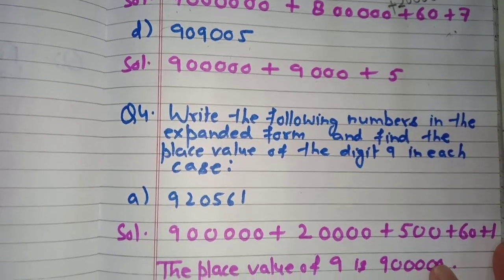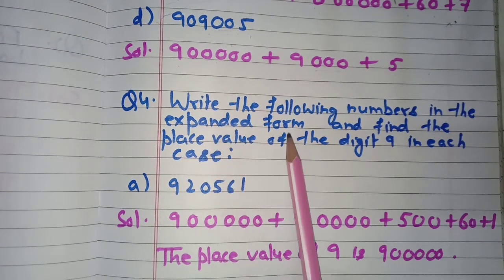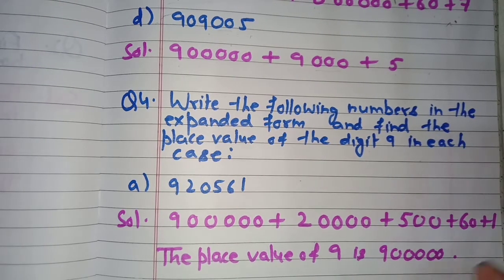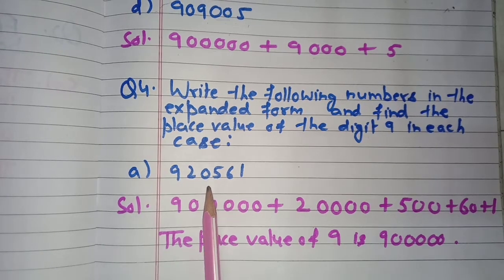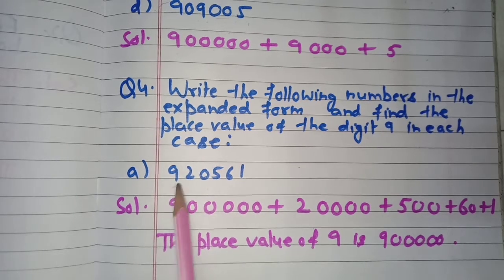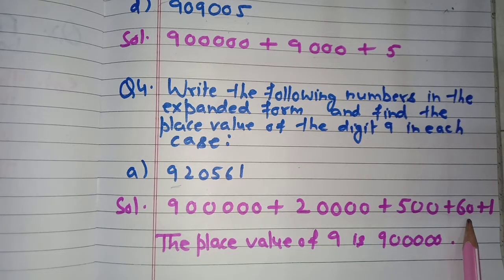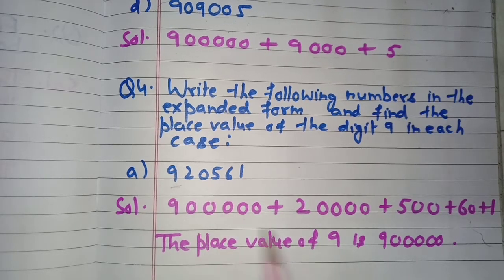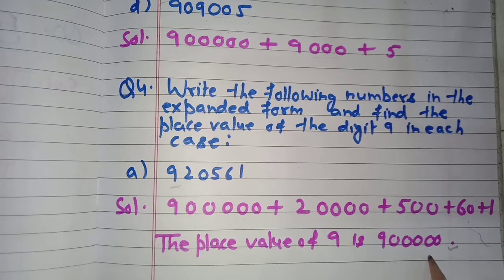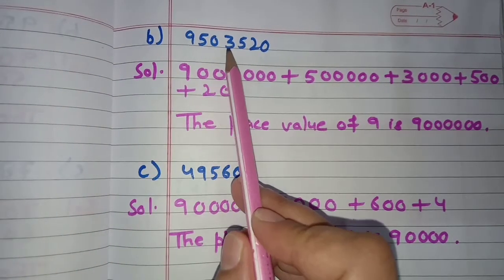Question number four: write the numbers in expanded form and find the place value of digit 9 in each case. In the first number, the place value of 9 is 9 lakh, which can be written in figures as 9,00,000 and in words as nine lakh.